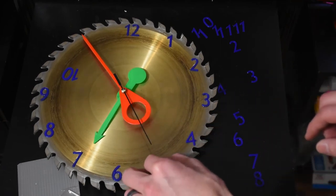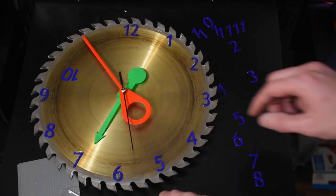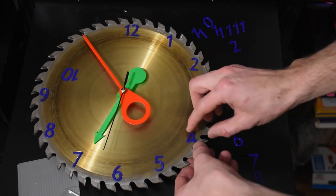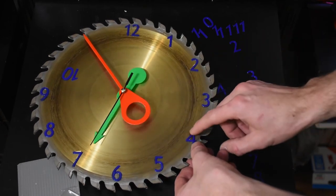These numbers are of course 3D printed, and I used the slots in the blade to position my 3, 6, 9, and 12. Then I simply placed the next number every 5 ticks.